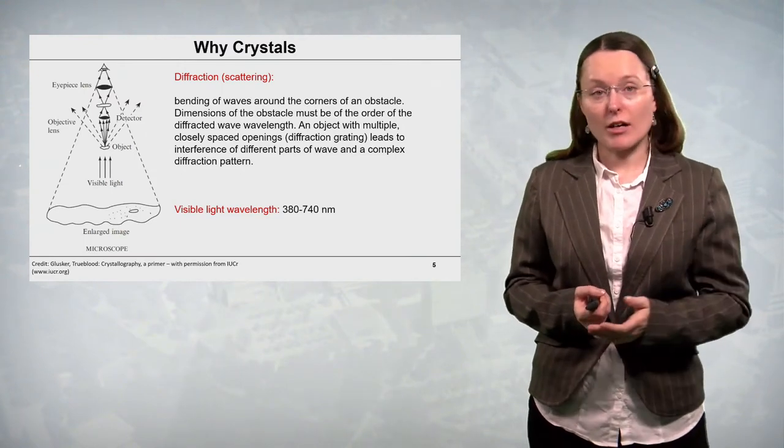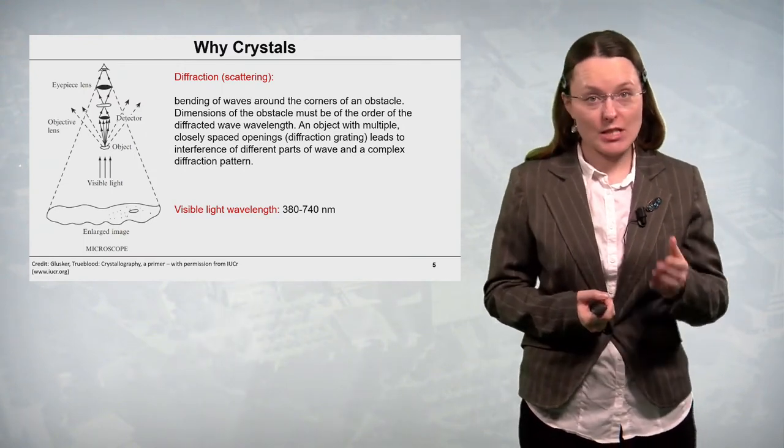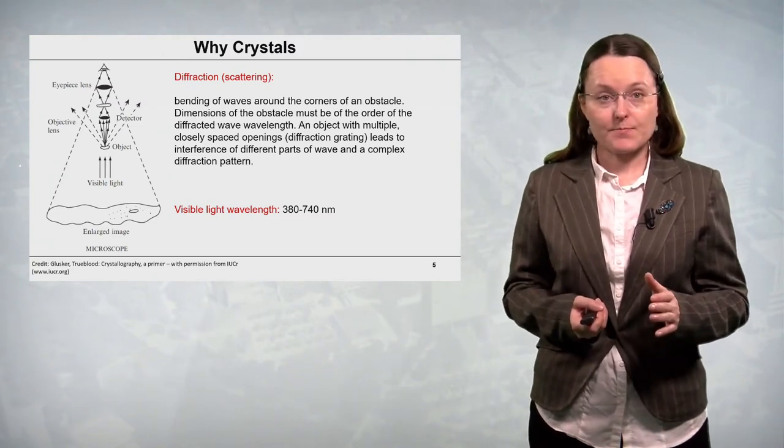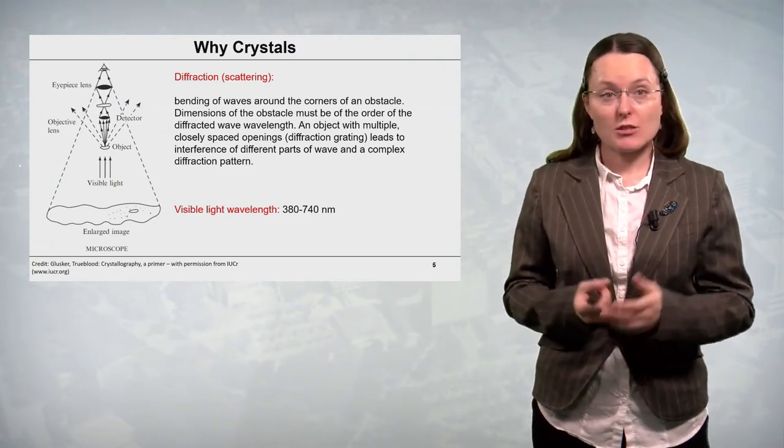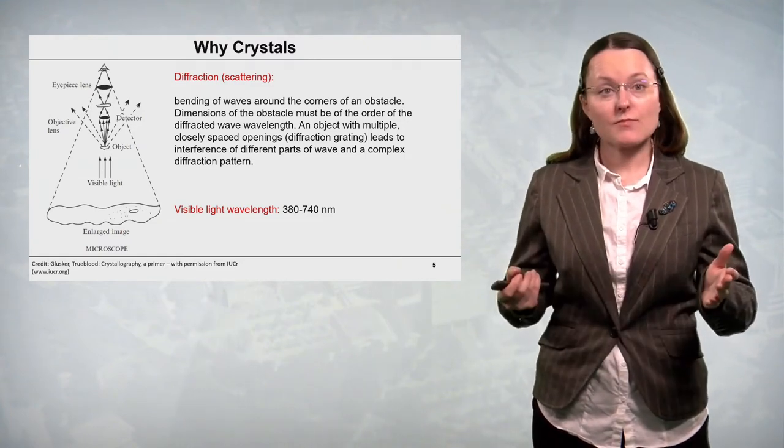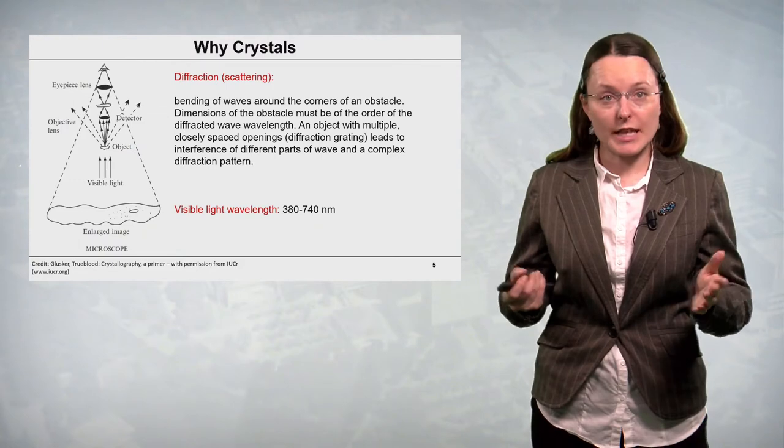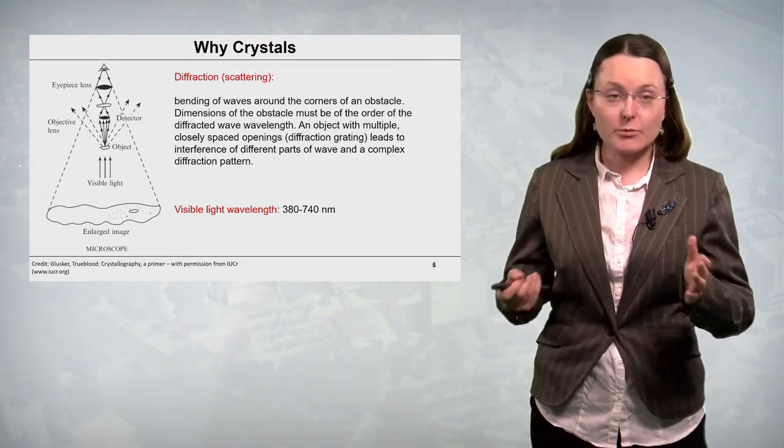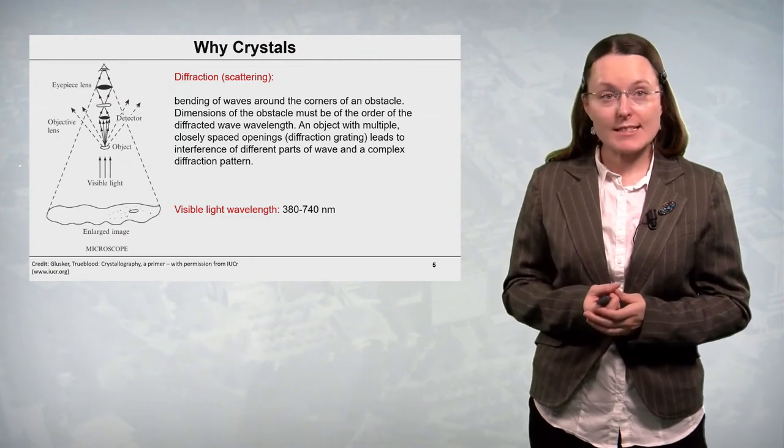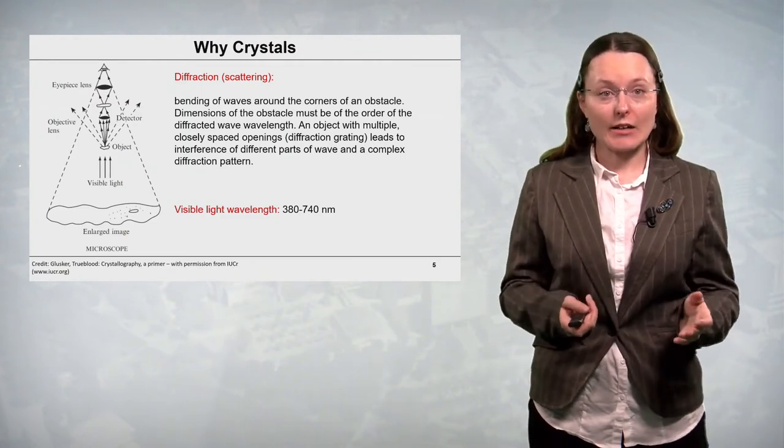Let's go back to our small object. Let's say its magnitude is in the order of the visible light wavelength. So it can diffract visible light. We obtain some diffracted beams. And these beams are focused together by a system of lenses. And we obtain an enlarged image.